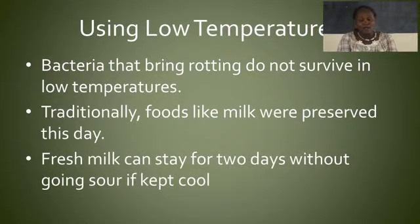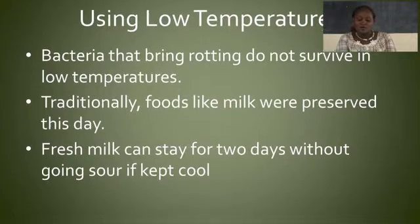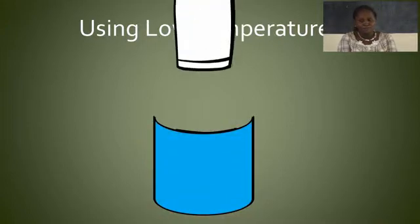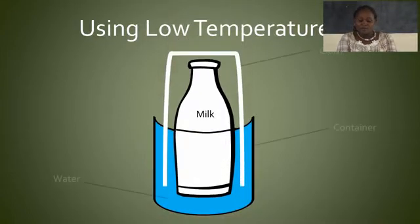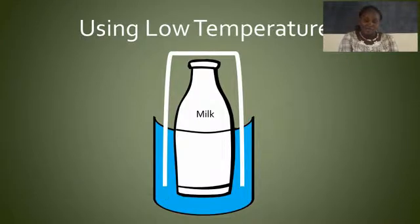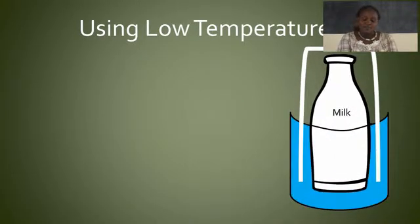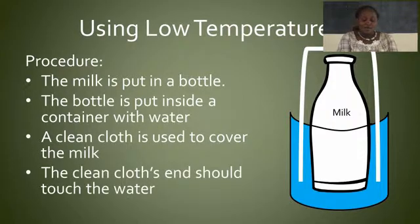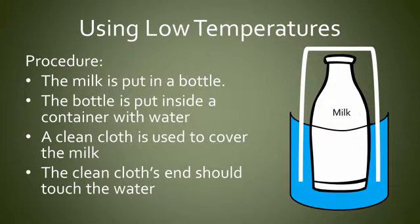How was it done? In other words, how was milk preserved using low temperatures? The milk should be put in a bottle and then placed in a container of cold water. A clean cloth with its ends stretching into the water should be used to cover the milk. The clean cloth's ends were meant to touch the water, and in that process the water was to rise up the clean cloth using capillary action.